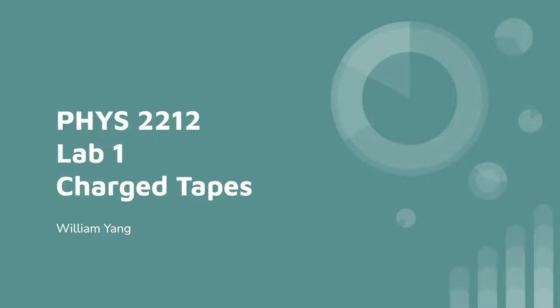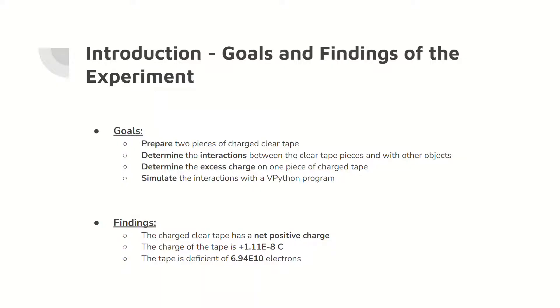Welcome to Lab 1 of Physics 2212, Charged Tapes. In this experiment, two pieces of charged tape are prepared and their interactions with each other and other objects are analyzed. From these observations, we can determine the total charge on the tape and model the point charges in Python. A summary of the findings is shown at the bottom of the slide where we see that the charge on the tape is positive.